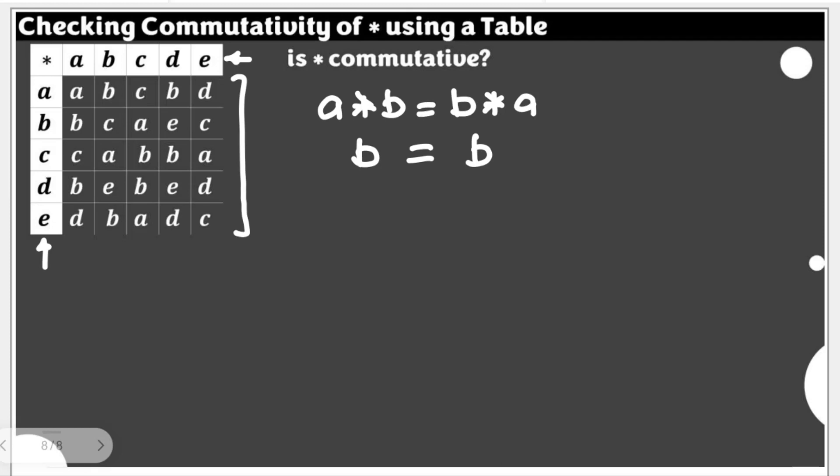But is it enough for us to declare that star is commutative? Of course not yet, because if we could see even just one counter-example, then it will now tell us that commutativity will not hold for this certain star given this Cayley table.